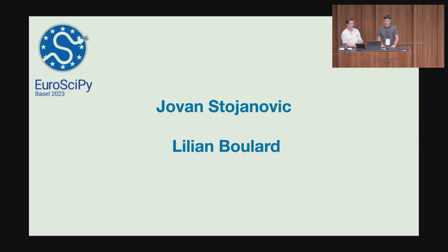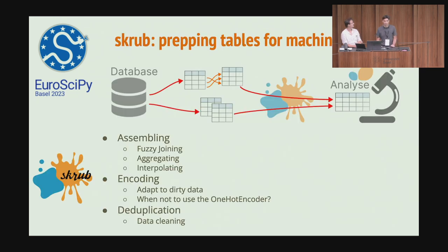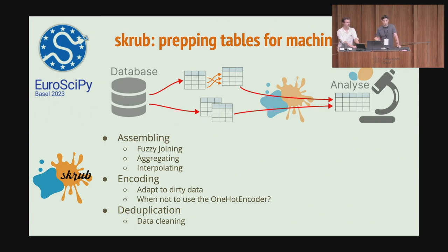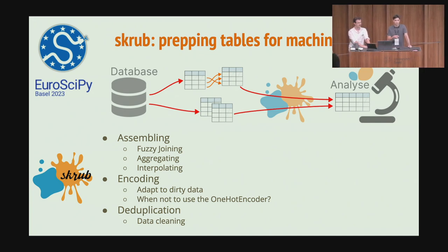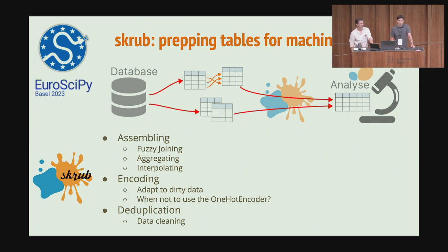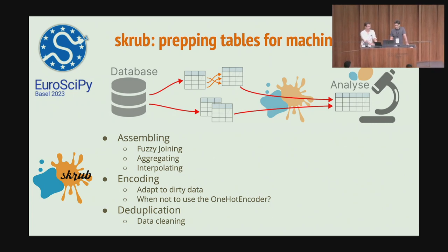We wanted to present with a poster a new Python package about to be released, called Skrub, which is about preparing tables for machine learning. Preparing tables for machine learning can be super complex because tables can come from various sources and can be non-normalized. We developed adapted methods for preparing them. Our poster is divided into three parts: assembling, which covers joining and aggregating tables; encoding, which transforms non-numerical values like strings or datetime into numerical values; and deduplication, which concerns data cleaning. Come see us at poster number four.